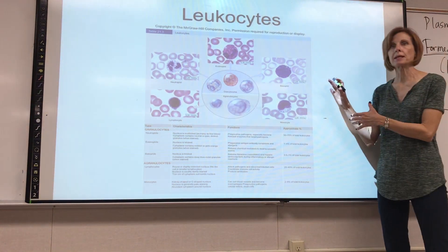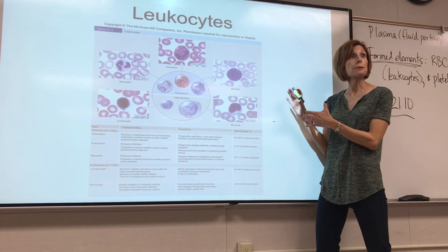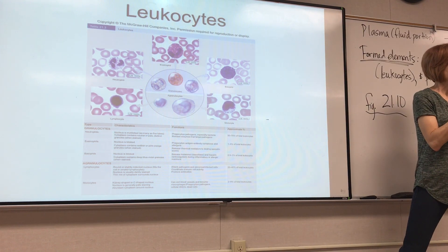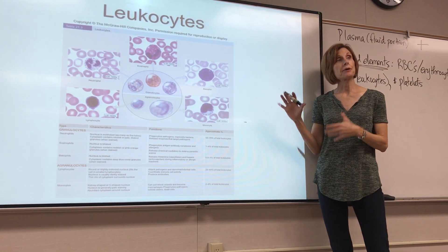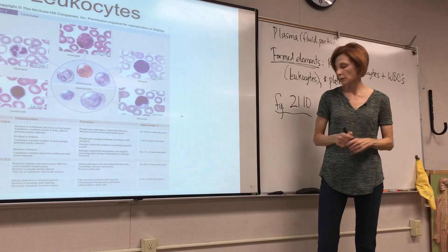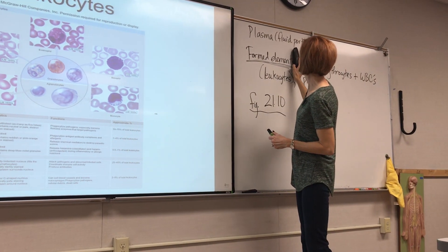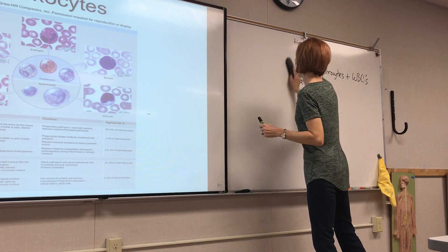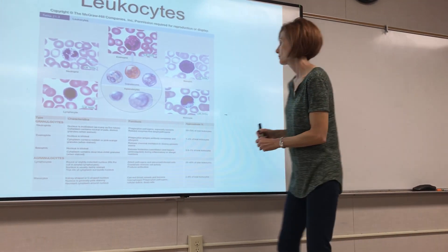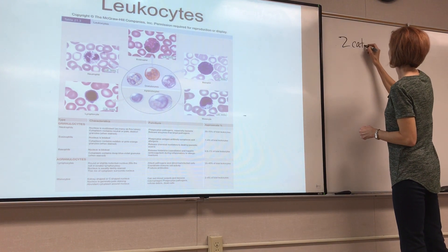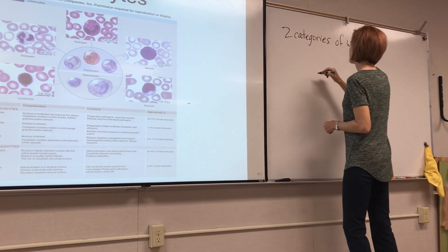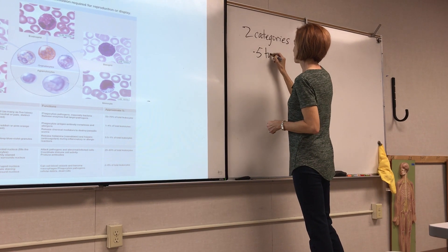The reason I don't want to go through all of this is because I want you guys to do it — it's part of the extra credit assignment. One part is to diagram and give the functions of the formed elements. We've already talked about red blood cells, but I want you to go through the different types of white blood cells. There are five different types in two categories.